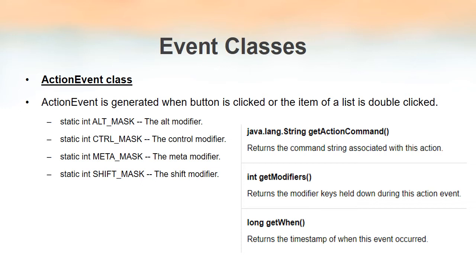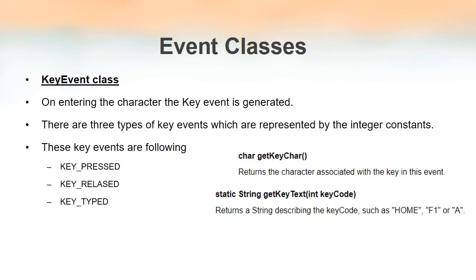Depending on which key is pressed, the corresponding integer variable will have the corresponding value. Some of the methods inside the ActionEvent class are getActionCommand, getModifiers, and getWhen. getActionCommand returns a string associated with the current action that took place. getModifiers tells which buttons were pressed when a particular event occurred. getWhen returns the time at which a particular event occurred.